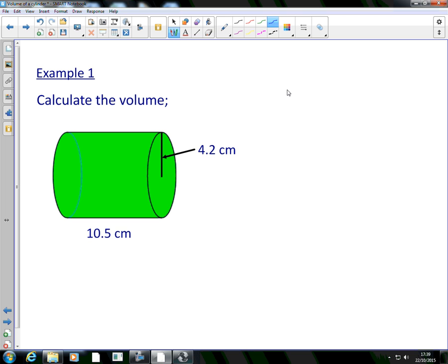Now we've got a cylinder. The volume of the cylinder is given by pi r squared h from the last slide. And we're calculating that now. So the radius of the cylinder is 4.2. The height is 10.5. So we're going to put that in as well. And then we go to our calculator.